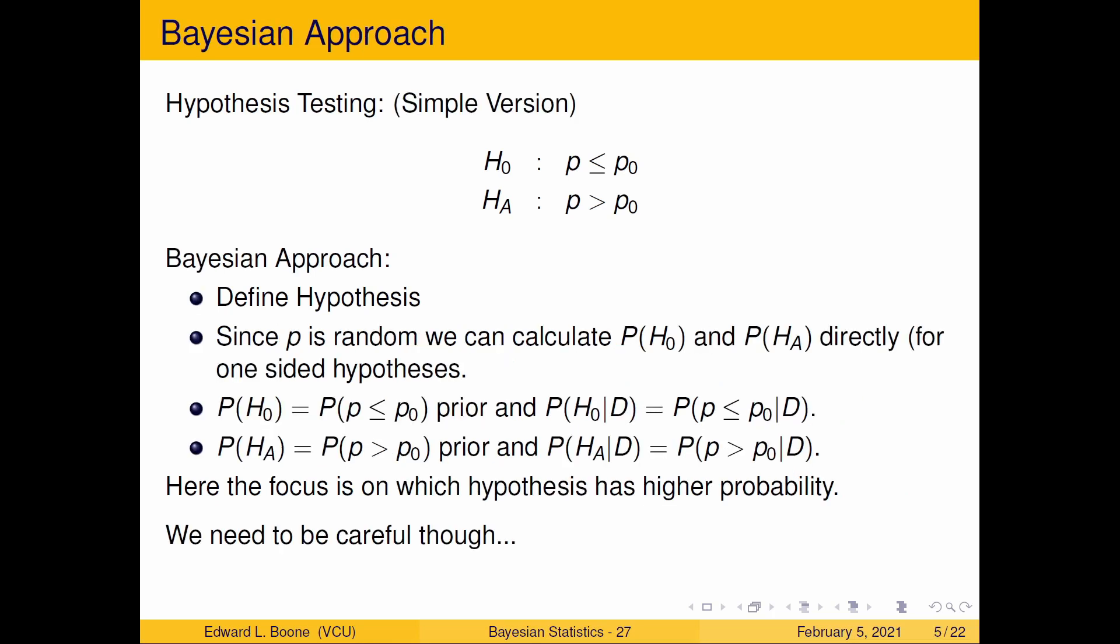The Bayesian approach is very different. You're going to define a hypothesis just the same, but since the parameter is random we can make a statement about this. We can actually calculate this probability. We can do this easily for one-sided hypotheses. We can calculate the prior and we can calculate it after having data. You can focus on whichever one has the highest probability. However, you need to be careful when you think about setting this up.